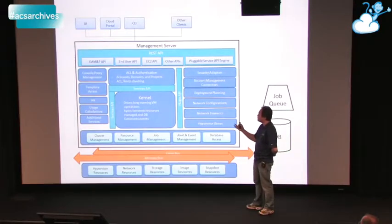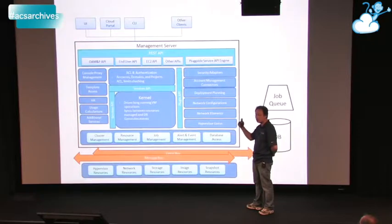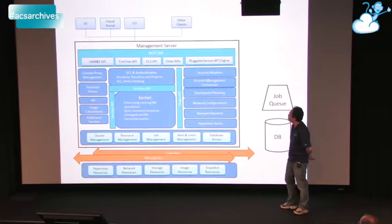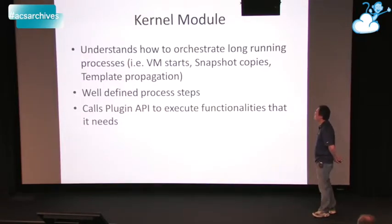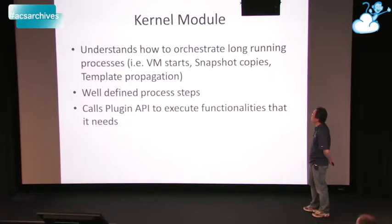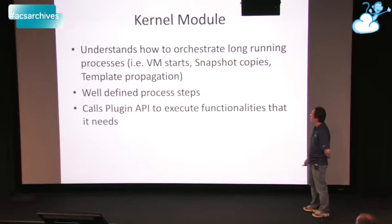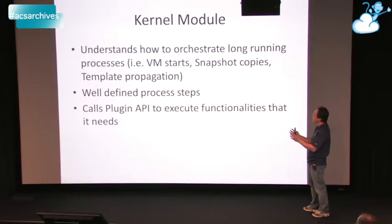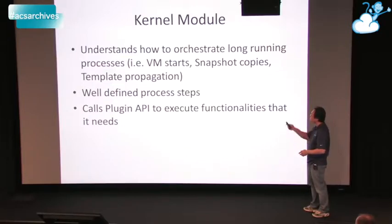What we mean by kernel is that when you go look at the operations that need to be run, these are the ones that actually have to talk to the resource and orchestrate the resource operations. This is our definition of the kernel module — it knows how to orchestrate long-running processes. When you talk to a resource, it may take up to minutes, and it may never return. You have to be able to time out and orchestrate those types of operations. The kernel module exposes this so that people who don't want to work in that area can still add functionalities into CloudStack without understanding these processes.